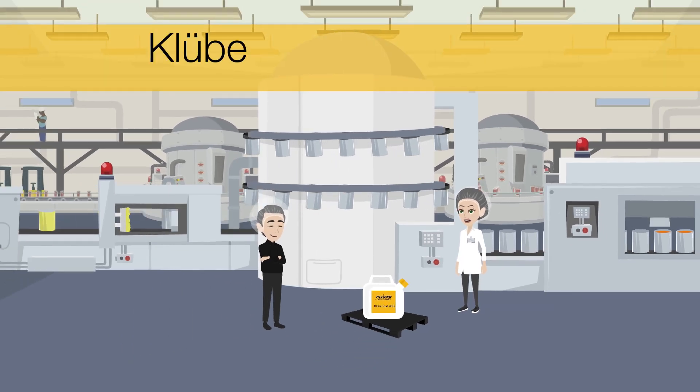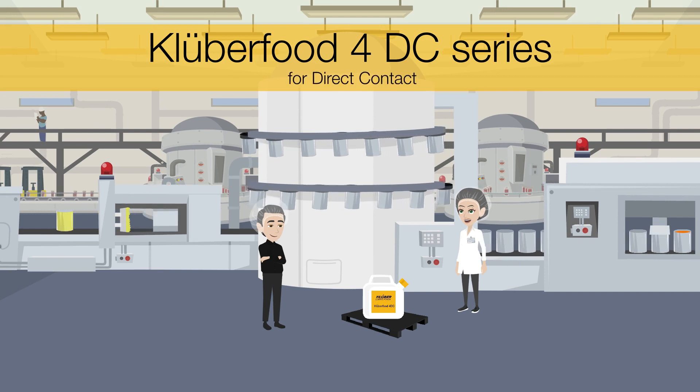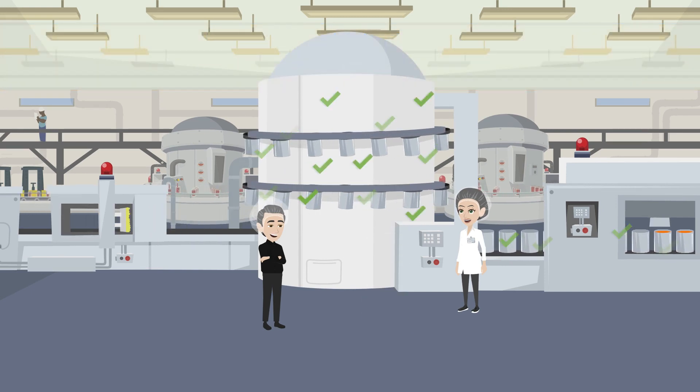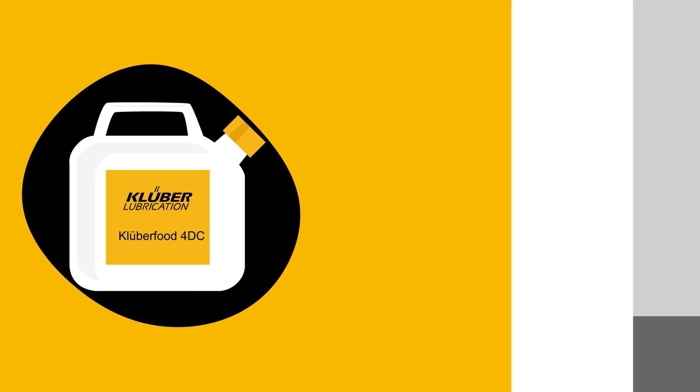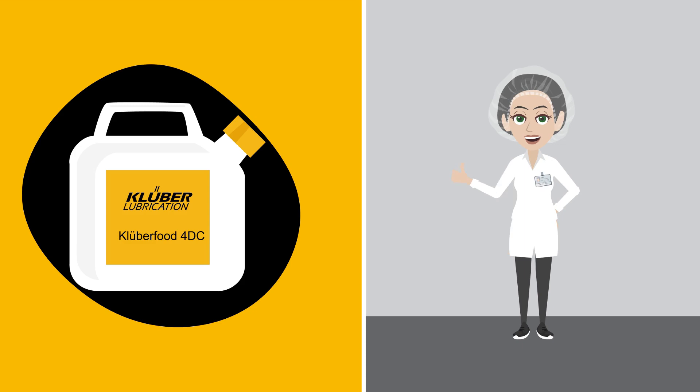The products of the Kluber Food 4DC series are allowed for direct food contact as technical processing aids. Kluber Food 4DC products are made of 100% food grade and non-genetically modified ingredients, which supports users in fulfilling food quality and safety standards.